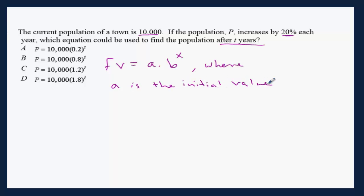and b is 1 plus the rate if the population is increasing, or 1 minus r if it's decreasing